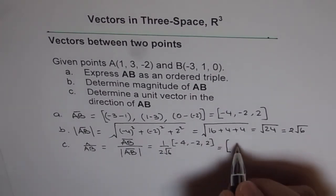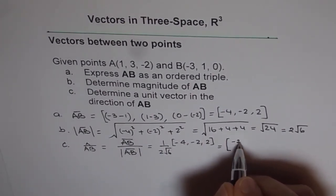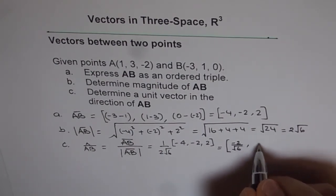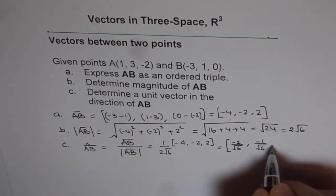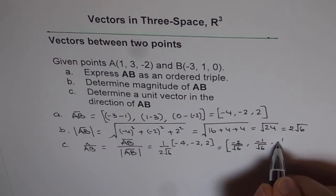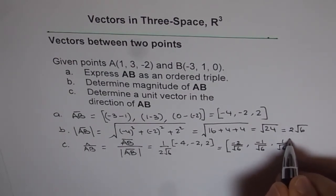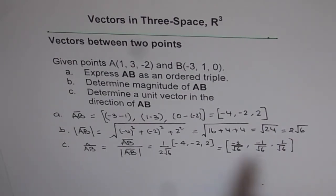So you could write this as, within bracket, when you divide this you get minus 2 over square root 6, minus 1 over square root 6, and 1 over square root 6. So this is the unit vector in the direction of AB.